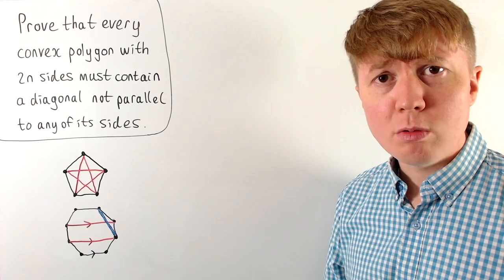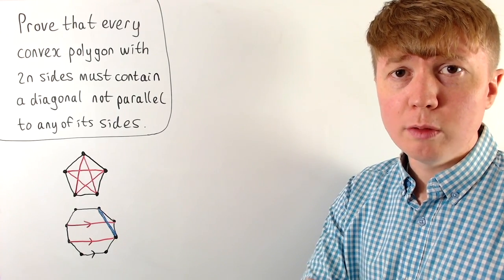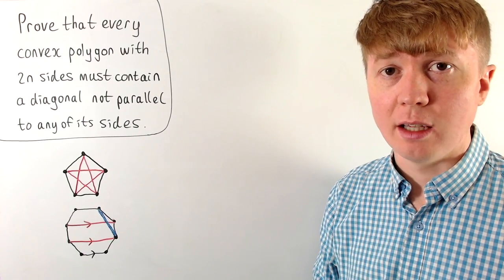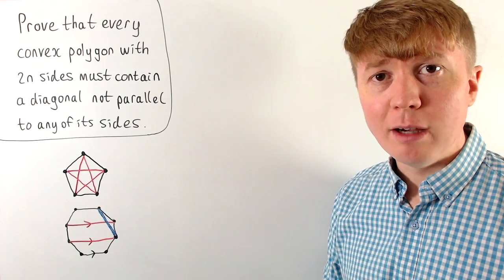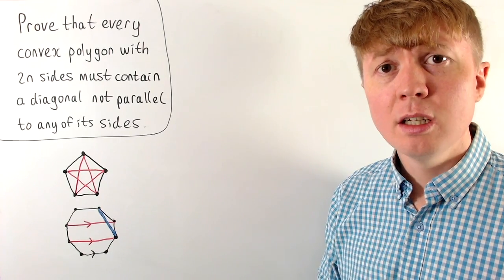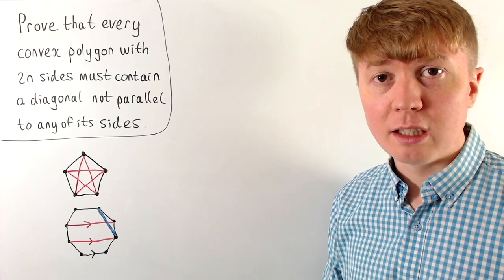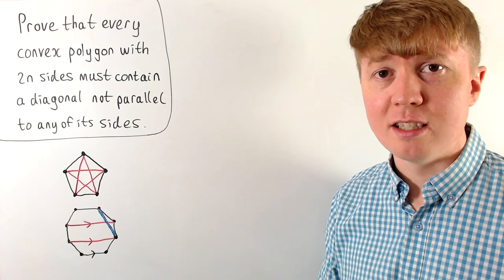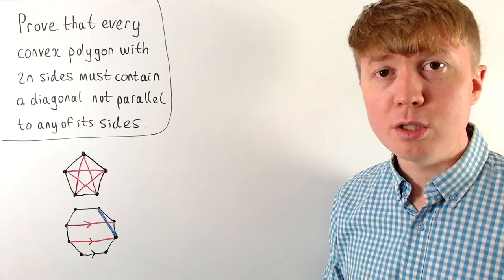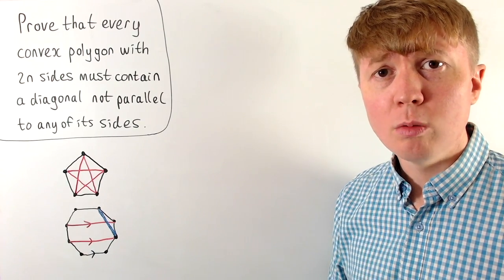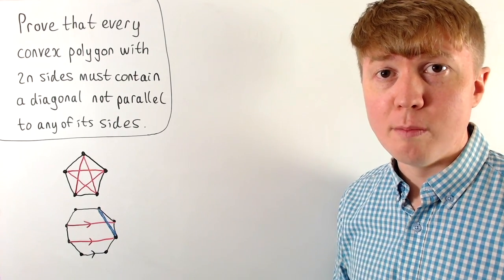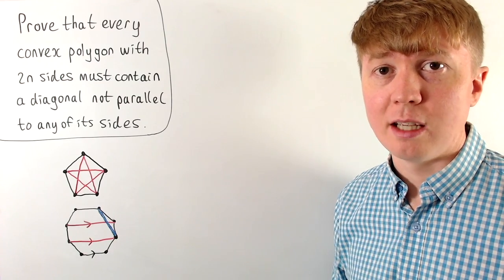To prove this when we've got an even number of sides, the idea is: first we'll find how many diagonals there are in our polygon with 2n sides. Then we'll try to find an upper bound for the number of diagonals which could potentially be parallel to any of the sides. We want to show that the number of diagonals which could be parallel to any side is less than the total number of diagonals, which would mean there must be some diagonals left over which aren't parallel to any of the sides.